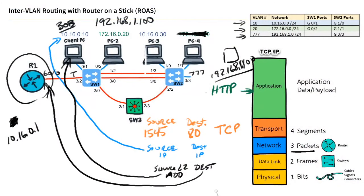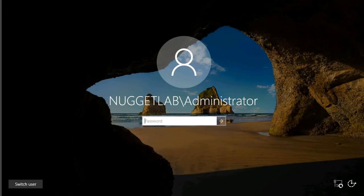That covers the bigger picture of how router on a stick works. Now let's actually configure it and test it. We'll configure the switch port to act as a trunk, configure R1's Gig 0/0, create three logical sub-interfaces supporting VLANs 10, 20, and 777, and assign IP addresses of .1, .1, and .5 on those specific subnets respectively.